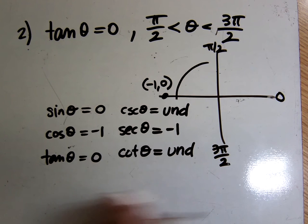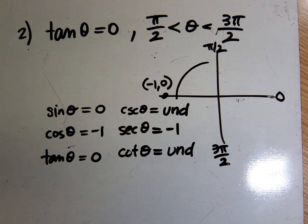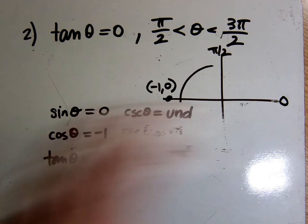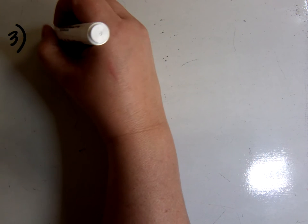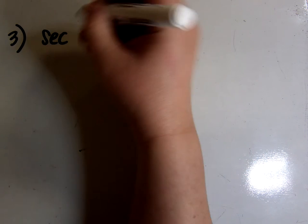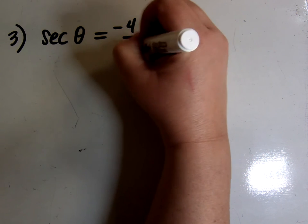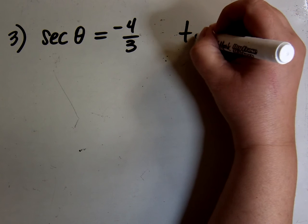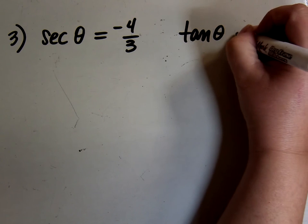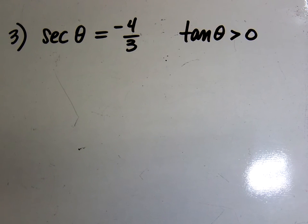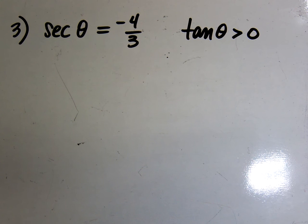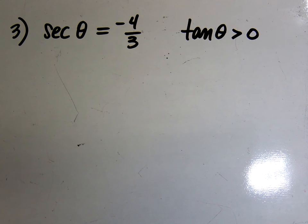So those are my answers. Sometimes they won't give you a roundabout way of telling you what quadrant you're in — sometimes they'll just say theta is in quadrant 4. I'm not going to do one like that because that's the easiest type: there's no figuring out what quadrant you're in because they just told you quadrant 4.